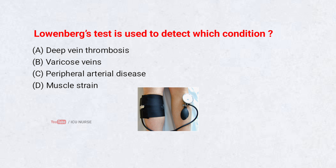Loewenberg's test is used to detect which condition? A. Deep vein thrombosis. B. Varicose veins. C. Peripheral arterial disease. D. Muscle strain. Correct answer: A.